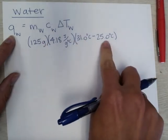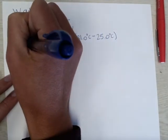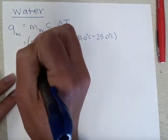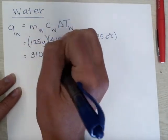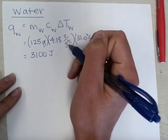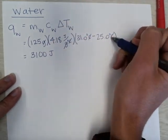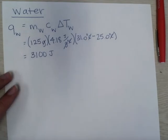So as we type this in and we get a Q, our Q of our water should be 3,100 joules. Our grams cancel and our degrees Celsius cancels there.